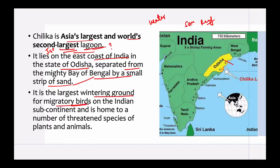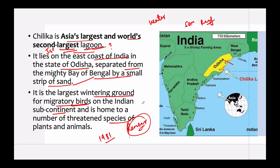Chilika Lake is also the largest wintering ground for migratory birds, so you can spot migratory birds here on the Indian subcontinent. It is home to a number of threatened species of plants and animals. In 1981, Chilika Lake was designated as the first Indian wetland of international importance under the Ramsar Convention.